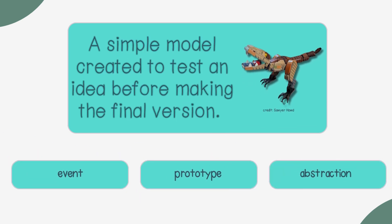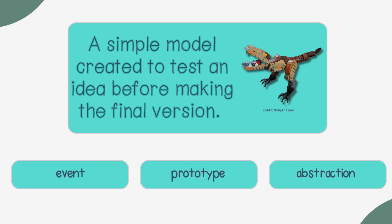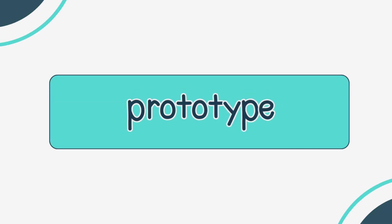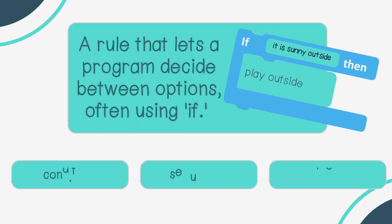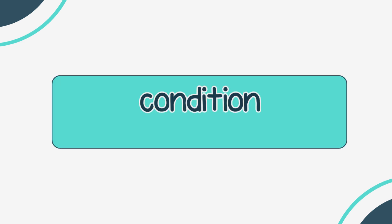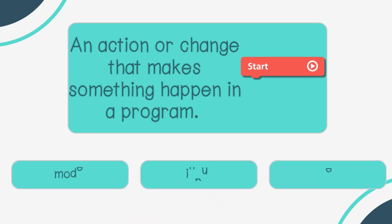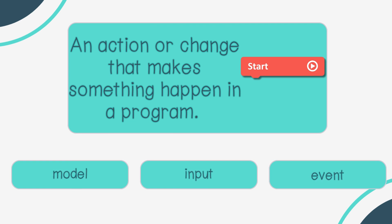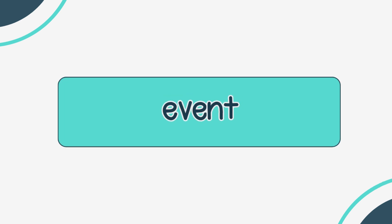A simple model created to test an idea before making the final version — event, prototype, or abstraction? Prototype. A rule that lets a program decide between options, often using IF — condition, sequence, or loop? Condition. An action or change that makes something happen in a program — model, input, or event? Event.